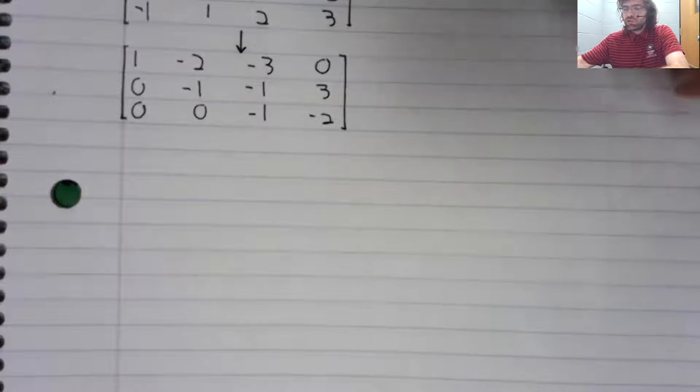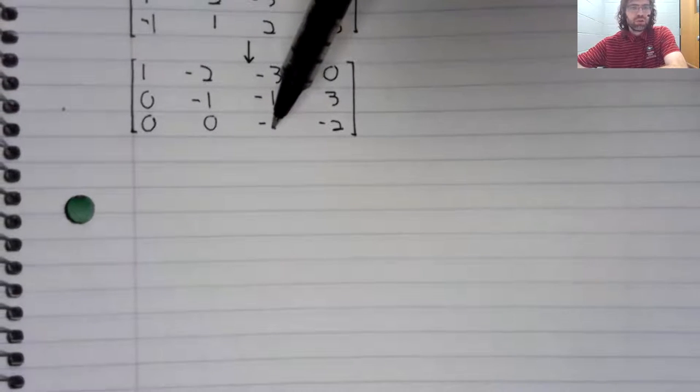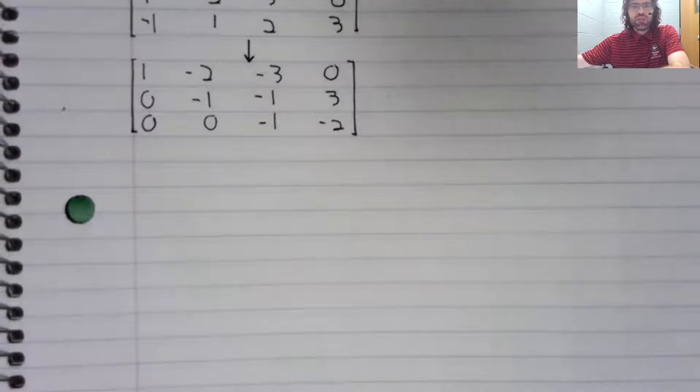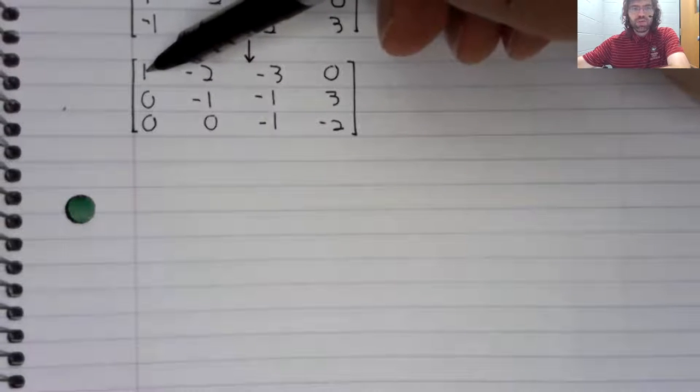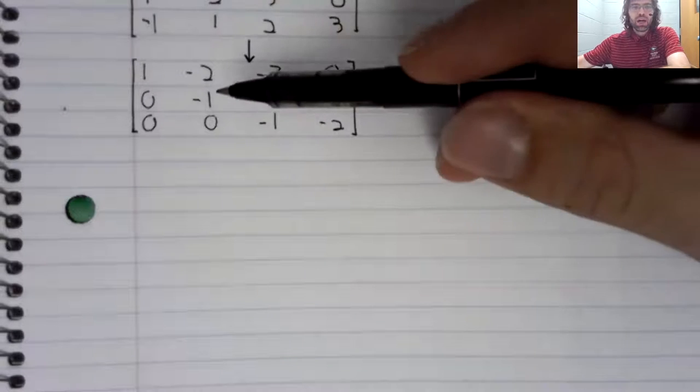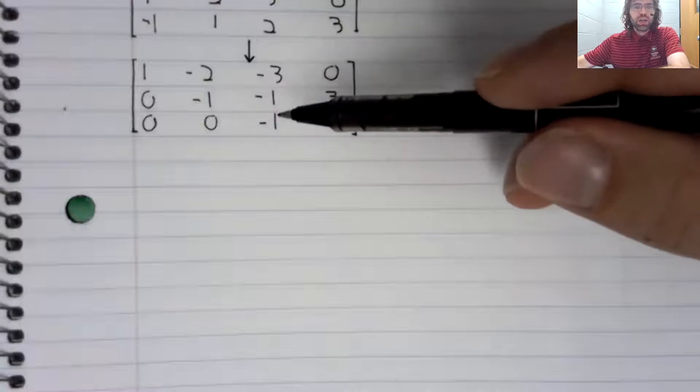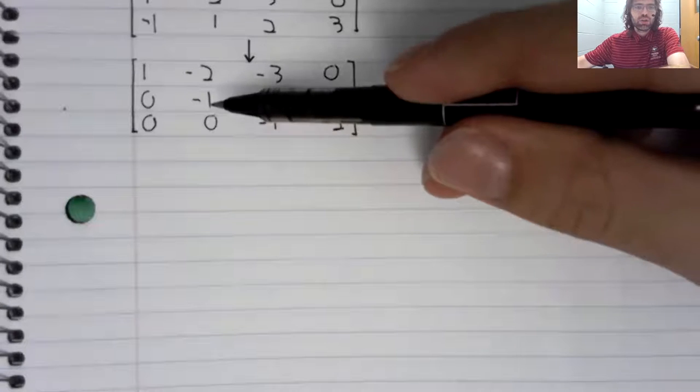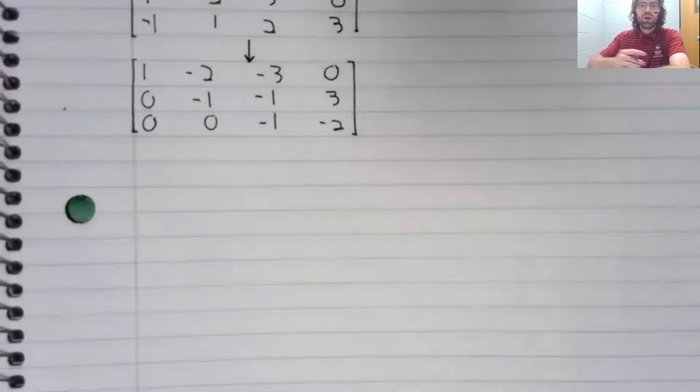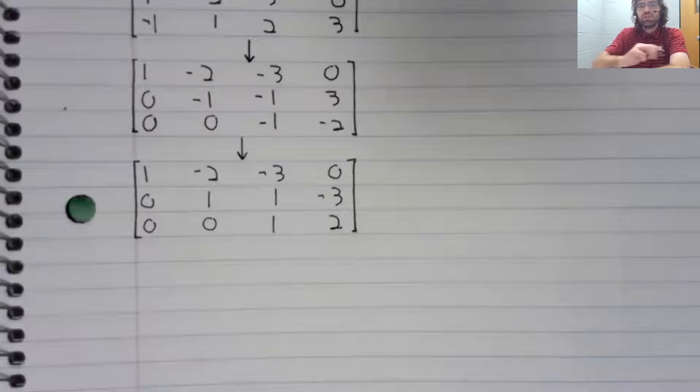Our leading entries are here, here, and here. We need our leading entries to all be one. So this is fine, we have a one here. We'll divide the second row by negative one and we'll divide the third row by negative one to turn these both into positive one. Like so.